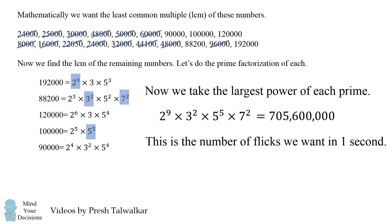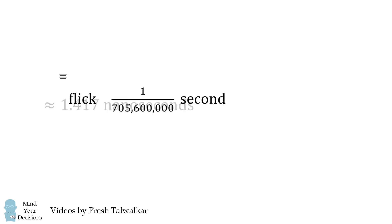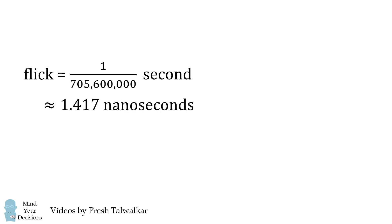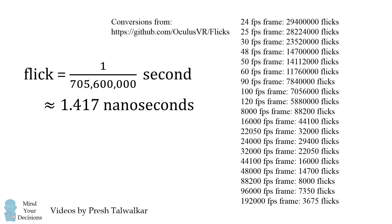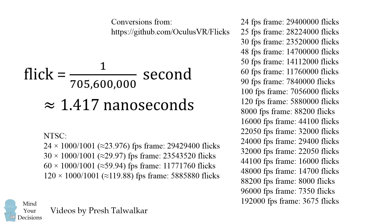So we know that this is the number of flicks we want in one second. Therefore, the unit of time — a flick — will be 1 divided by this number, which is approximately 1.417 nanoseconds. With this unit of time, we can convert all of these common frame rates into flicks, and it'll be an exact integer number, allowing us to exactly define each frame rate and sync between them without any problems. It's a pretty interesting concept, and it's interesting how number theory comes into play in deriving it.